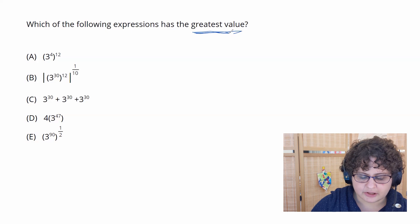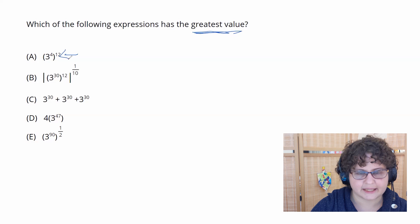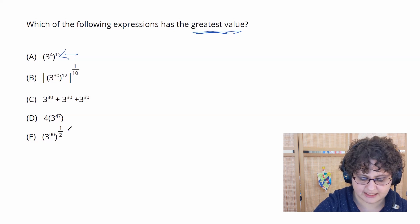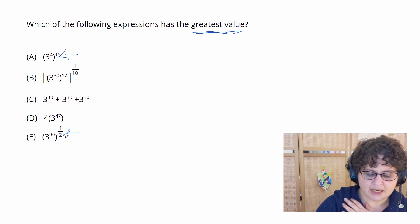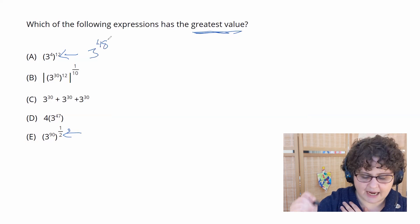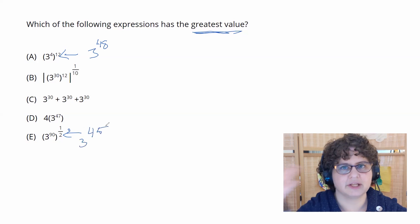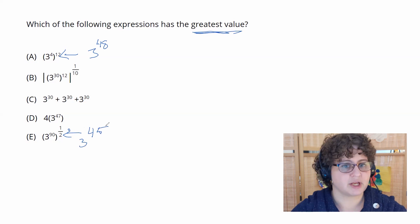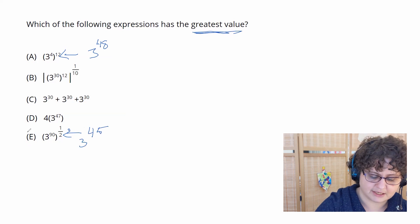So let's actually start with this first one here. And let's compare it to this guy down here, because they're both three with two exponents, so they're relatively similar. Now 3 to the 4th to the 12th is the same thing as 3 to the 48th, and 3 to the 90th to the 1 half is the same thing as 3 to the 45th. So clearly you compare these two, the one that has 48 threes is going to be bigger than the one that has 45 threes, so we can say answer E is incorrect.